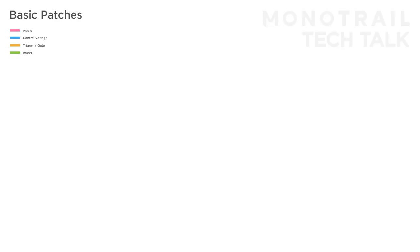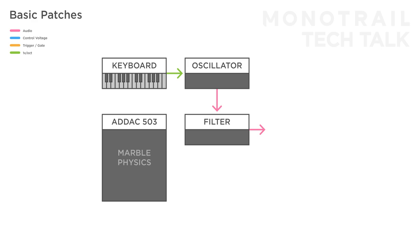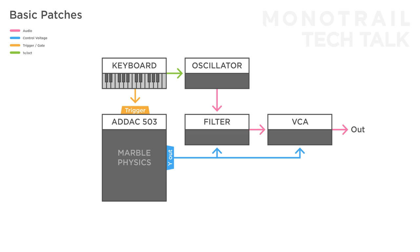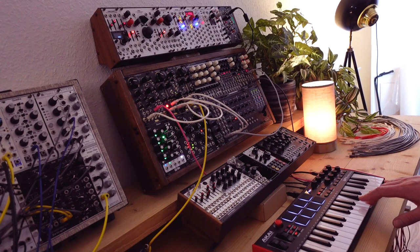Let's start with a few basic patches with a focus on single aspects of Marble Physics. Here, Marble Physics is used as an envelope generator. A keyboard is tuning the oscillator, making a voice with a filter and VCA. The gate output of the keyboard is used to trigger Marble Physics. The X axis is locked and the Y output is used to open the filter as well as the VCA. Remember that even though the input on Marble Physics is called trigger, it acts as a gate and keeps pushing the marble as long as the input is high, or in this case a key is pressed.